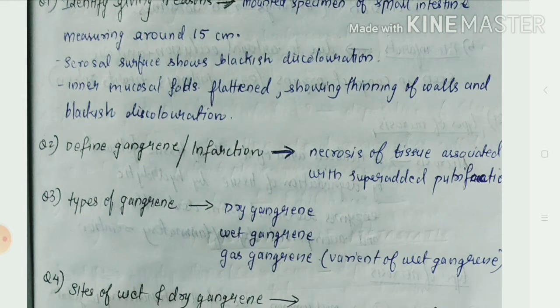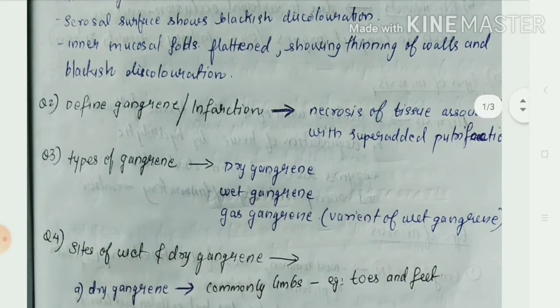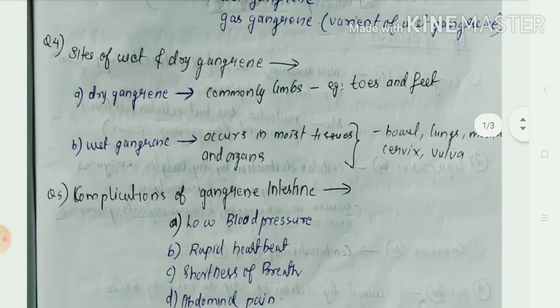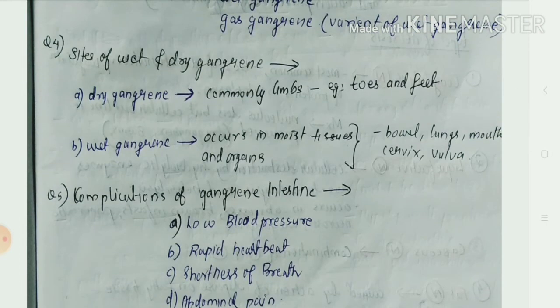The types of gangrene are dry gangrene, wet gangrene, and gas gangrene, which is a variant of wet gangrene. Dry gangrene commonly affects the limbs — for example, toes and feet. Wet gangrene occurs in moist tissues and organs, such as the bowel, lungs, mouth, cervix, and vulva.